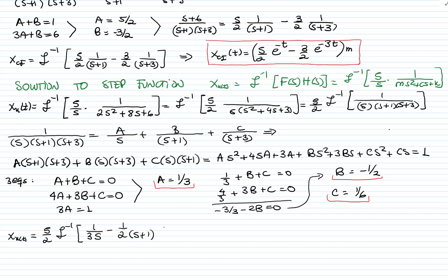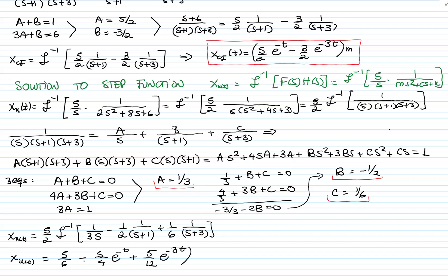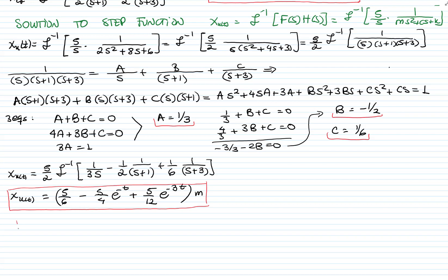The inverse transform gives us: the inverse of 1/s is 1, the inverse of 1/(s+1) is e^(-t), and the inverse of 1/(s+3) is e^(-3t), all multiplied by 5/2. The total solution is the solution for the initial conditions plus the solution for the step function.